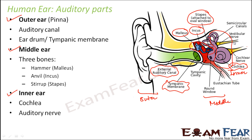The ear helps you perceive sound, but how do you understand what you are hearing? For example, suppose your friend calls out 'come here' — your ear helps you listen to those words, but to interpret their meaning you need your brain. So there must be a connection between the ear and the brain, and that connection is provided by the auditory nerve.